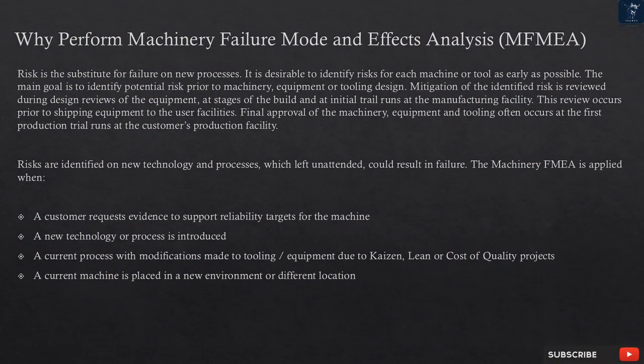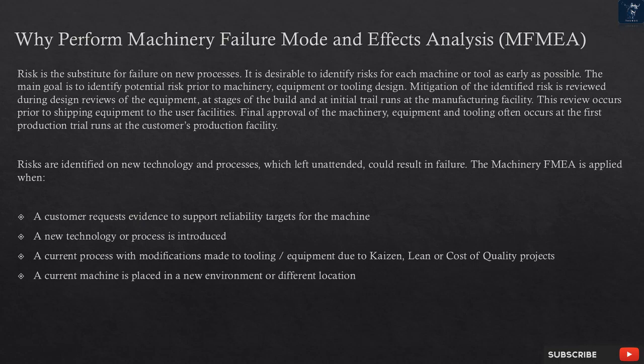Why perform Machinery Failure Mode and Effects Analysis (MFMEA)? Risk is the substitute for failure on new processes. It is desirable to identify risks for each machine or tool as early as possible. The main goal is to identify potential risk prior to machinery, equipment, or tooling design. Mitigation of the identified risk is reviewed during design reviews of the equipment, at stages of the build, and at initial trial runs at the manufacturing facility — prior to shipping equipment to the user facilities.